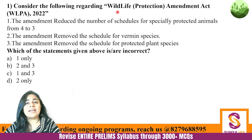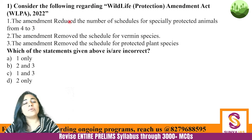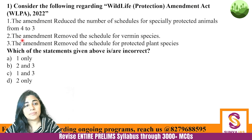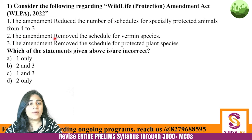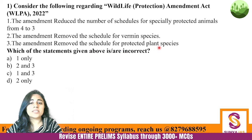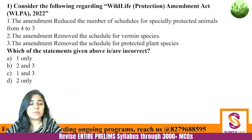Consider the following regarding the Wildlife Protection Amendment Act 2022: the amendment reduced the number of schedules for specially protected animals from 4 to 3; the amendment removed the schedule for vermin species; and the amendment removed the schedule for protected plant species. Which of the given statements are incorrect?